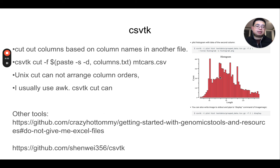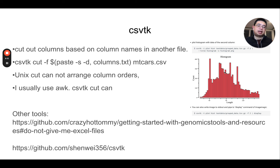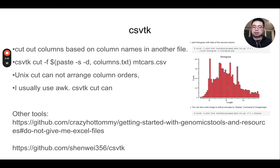Even more powerful, you can make plots in the command line. You can use csvtk plot to plot histograms and scatter plots and display them right in the terminal. Although I usually use ggplot2 because it's more flexible, this gives you an alternative to visualize your data in the terminal. Get the link to download it.